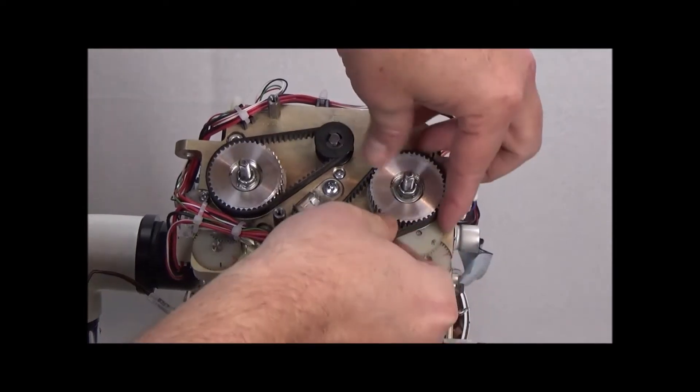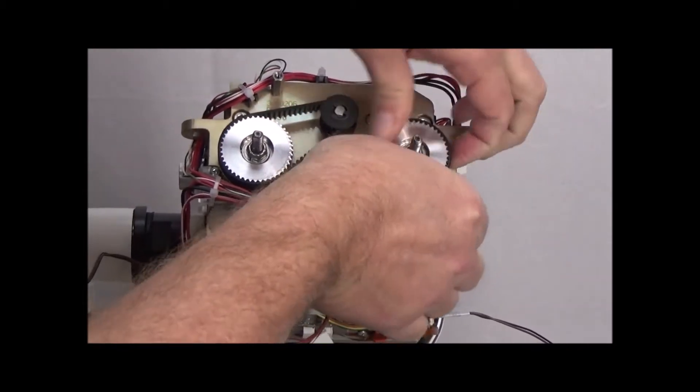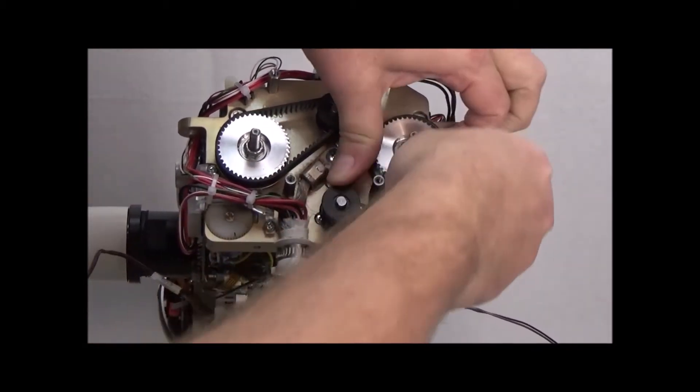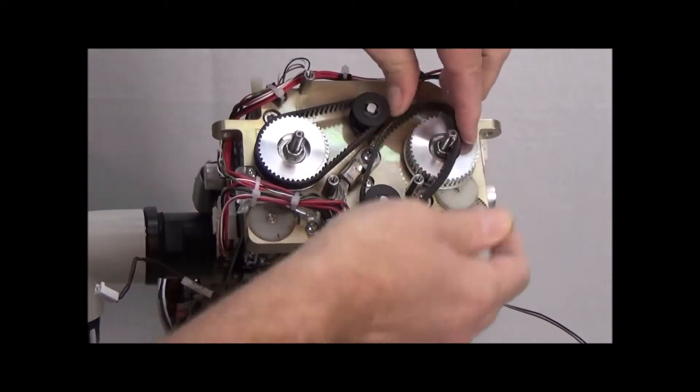Then, we're going to work this belt off by lifting it up and just turning the gear until we slide it all the way off.